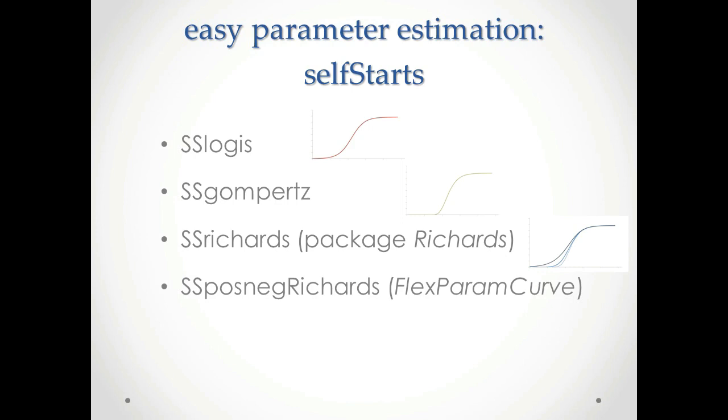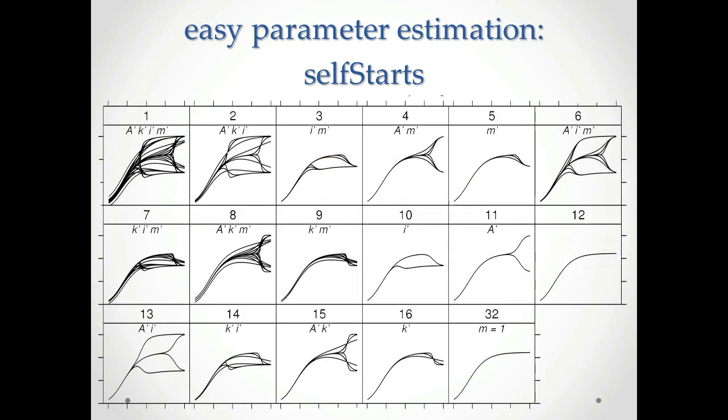So in FlexParamCurve, SSPosnick Richards can model equations from three-parameter S-shaped curves up to eight-parameter double Richards curves. And just as the Richards curve can be reduced to common S-shaped curves such as the logistic curve, so the double Richards curve can be reduced to non-monotonic double versions of the same curve, such as the double logistic curve, plus all the intermediates. So here are some examples of the types of shapes of curve you can achieve using some of the different models in SSPosnick Richards.